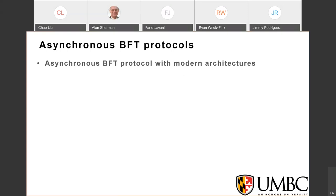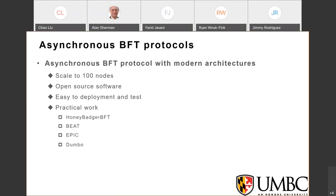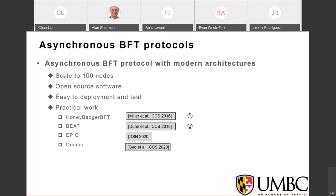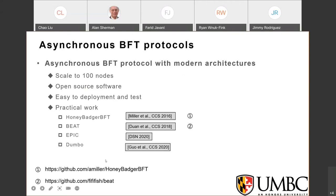Modern asynchronous BFT protocols with new architectures have been proposed in recent years. They can scale up to 100 nodes, are open-sourced, and are easy to deploy, modify, and test. Notable examples include HoneyBadger BFT proposed by Miller at CCS 2016, BEAT proposed by Duan at CCS 2018, and EPIC published at DSN 2020. The first two projects are open-sourced, and our work EPIC is based on the BEAT open-source library.